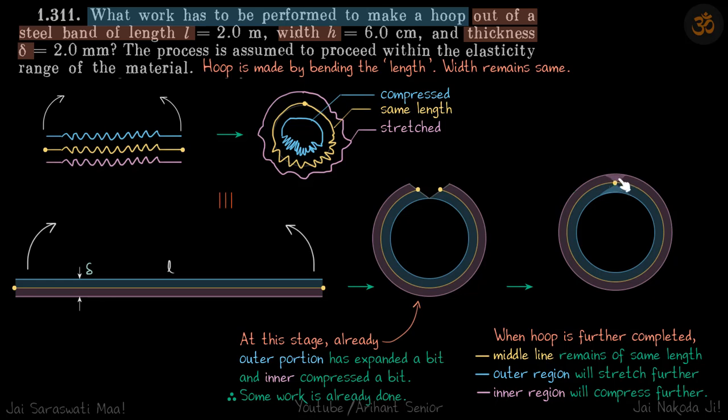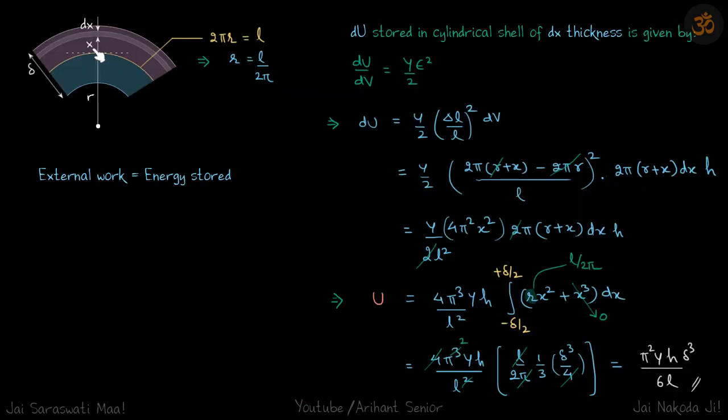So here also to stretch it we have to do some work and here to compress it also we have to do some work. So let's find what that work is. So we'll take a small element. Why? Because the strain is different in different parts of the rod. In fact you can see that on the top part it is elongation and in bottom part it is compression.